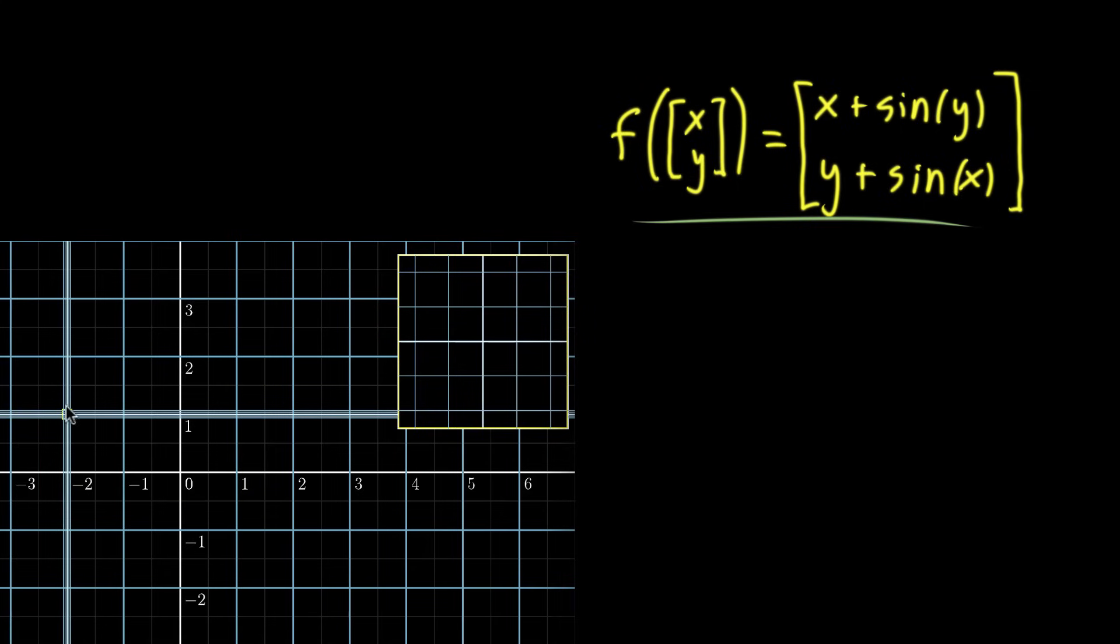And moreover, we zoomed in on a specific point. Let me actually write down what point we zoomed in on. It was negative 2, 1. And I added a couple extra grid lines around it just so we can see in detail what the transformation does to points in a neighborhood of that point.